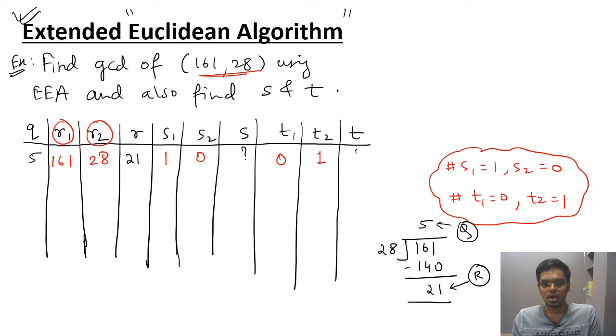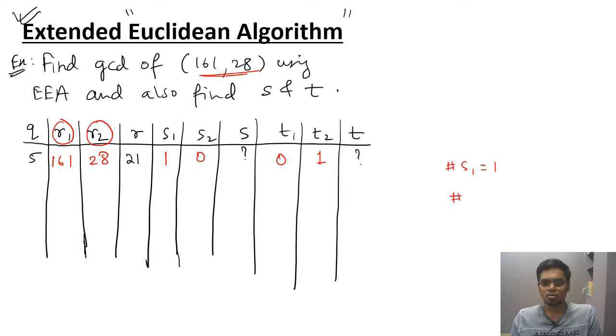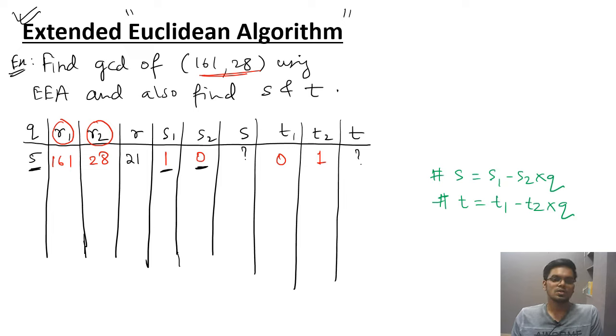What about S? What about T? How to get this value? We have one more equation. The equations are S is equal to S1 minus S2 into Q and same goes for T. T is equal to T1 minus T2 into Q. So what is the value of S1? S1 is 1 and S2 is 0 and Q is 5. So after substitution, S would be equal to 1 minus 0 into 5 which is 1. So value of S is 1 and similarly you can find the value of T. The value of T is equal to T1 which is 0 minus T2 which is 1 into Q which is 5. So minus 5.